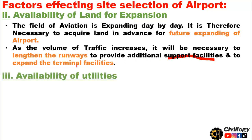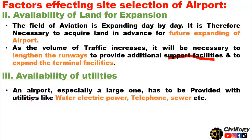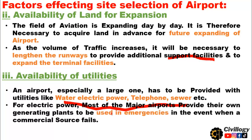The third point is availability of utilities. An airport, especially a large one, has to be provided with utilities like water, electric power, telephone, and sewer, etc. For electric power, most major airports provide their own generating plants to be used in emergencies, in the event a commercial source fails.